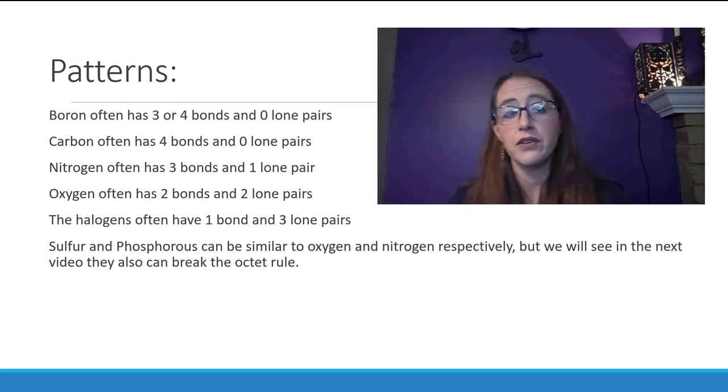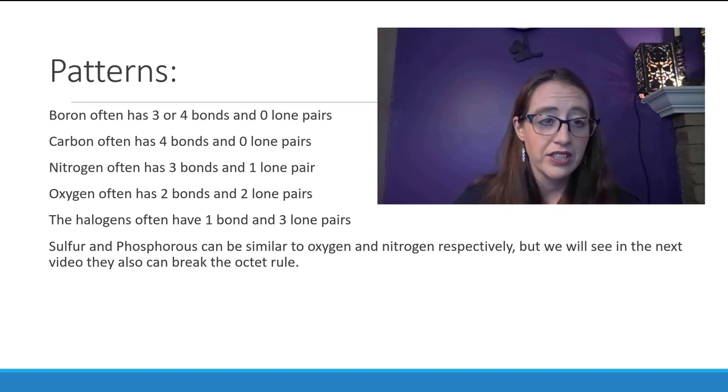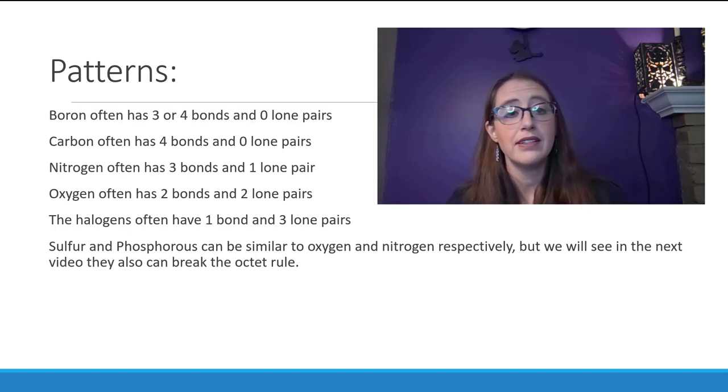So boron will often have three or four bonds and zero lone pairs. Carbon often has four bonds and zero lone pairs. Nitrogen often has three bonds and one lone pair. Oxygen often has two bonds and two lone pairs. Halogens often have one bond and three lone pairs.